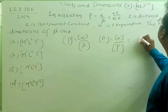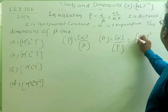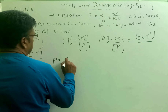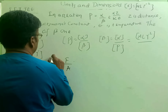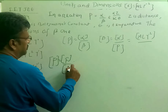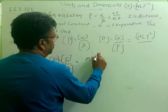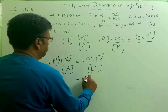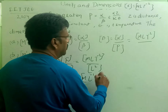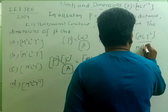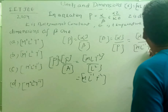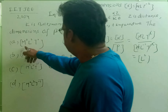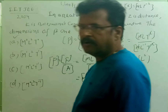Alpha has dimensions MLT⁻². Pressure is force divided by area, so dimensions of pressure are MLT⁻² divided by L², giving ML⁻¹T⁻². Therefore, dimensions of beta equal MLT⁻² divided by ML⁻¹T⁻². The T⁻² terms cancel and ML cancels, leaving L², which is M⁰L²T⁰. So the answer is option A.